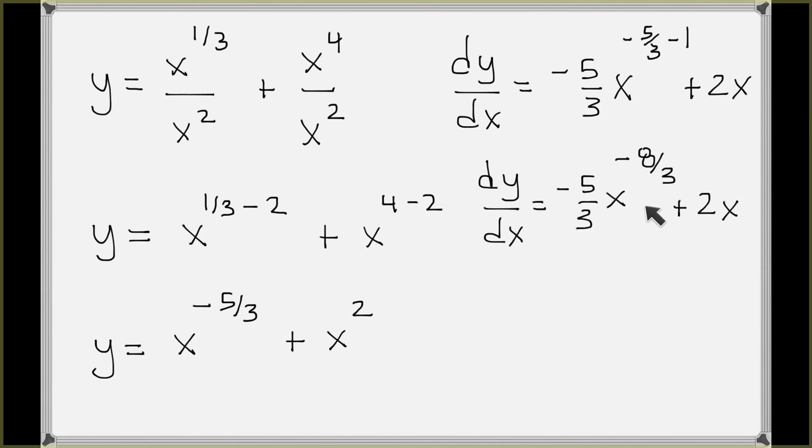And let's see, negative five-thirds minus one would be negative eight-thirds, and so that's the derivative here. I'm pretty much done taking the derivative. If you want to simplify it, which is a good idea—getting rid of the negative exponents—you will be required to do that at some point.